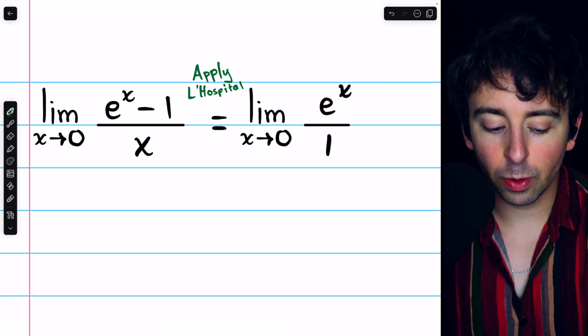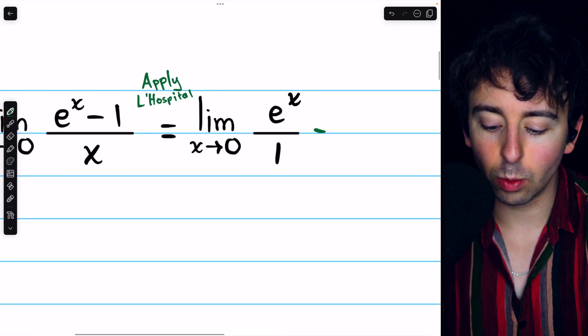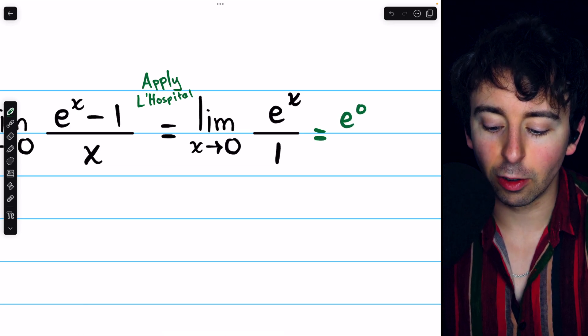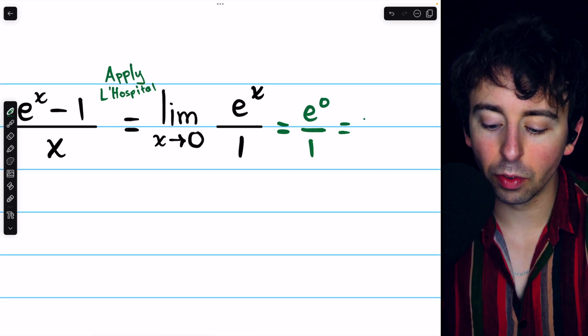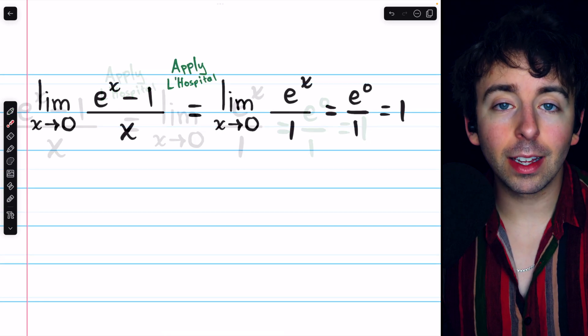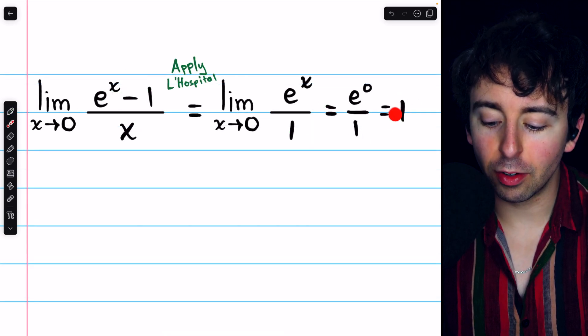Plugging in x equals zero, we find that this limit is equal to e to the zero over one, which of course is just one over one, which is one. And applying L'Hôpital's rule doesn't get much easier than that.